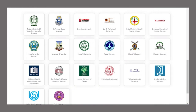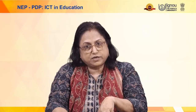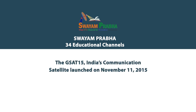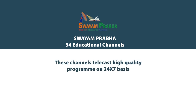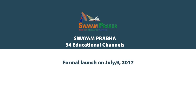All credits earned through the SWAYAM platform can be used for degrees and diplomas via the ABC portal. Institutions are now being asked to get registered on the ABC portal, and students interested in earning credits from SWAYAM will need to first register on the ABC portal and then request credit transfer to the ABC portal. Another major project is SWAYAMPrabha. At present we have 34 educational channels based on India's communication satellite GSAT-15, with two transponders allotted specially for SWAYAMPrabha. The test run started in 2016.